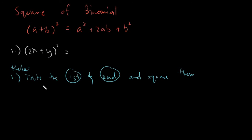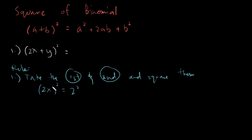Our first term is 2x. When we get the square of 2x, for numbers you evaluate — meaning you take what is 2 squared. For the letter, you just simply take that variable and multiply the exponent by the exponent outside, which is 2. So 2 times 1 gives x squared. Evaluating gives us 4x squared. Next we have y squared: y raised to 1, times 2, gives y squared.